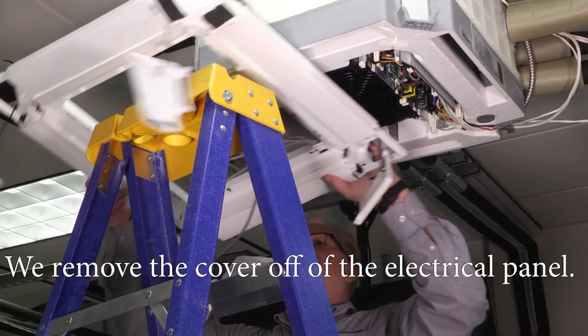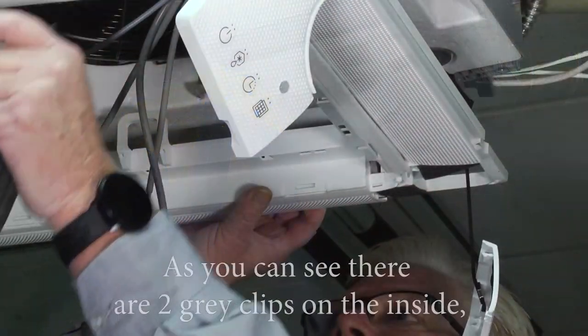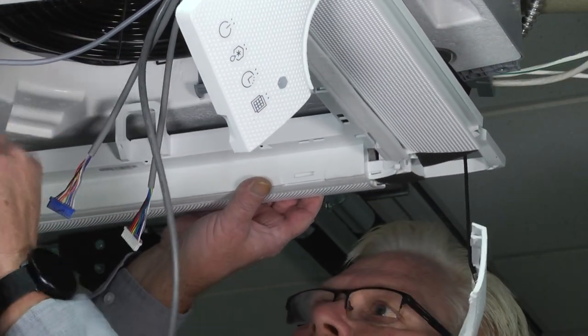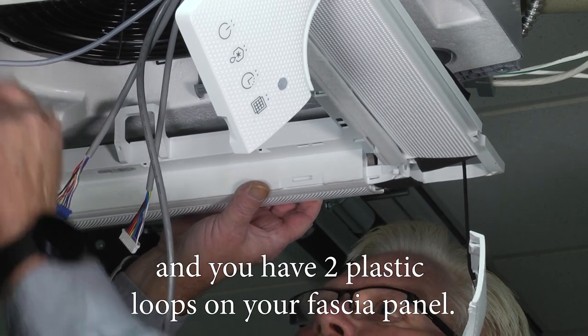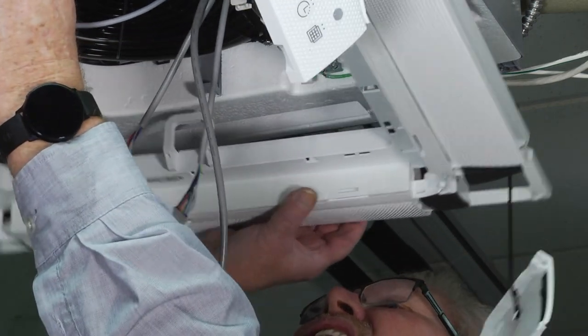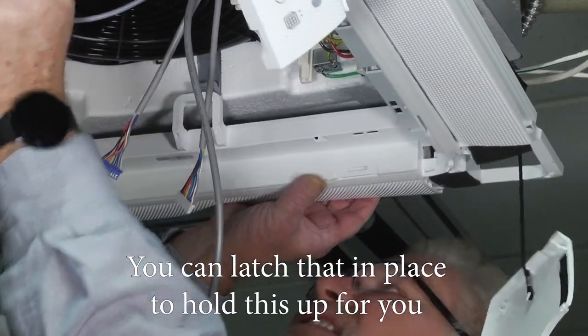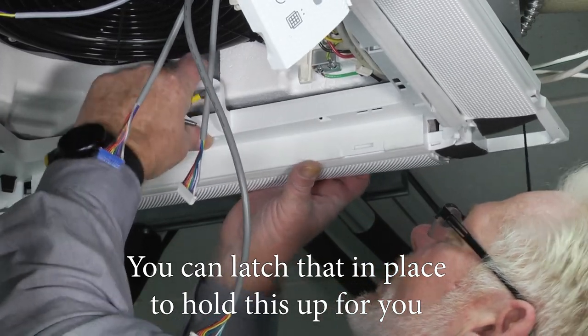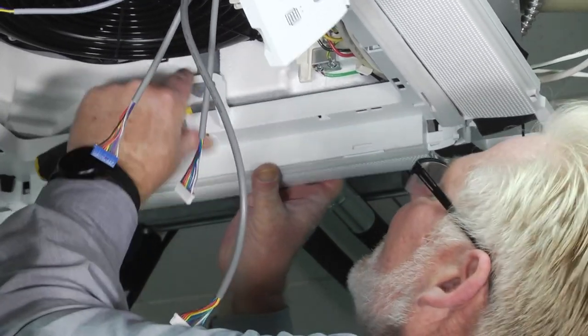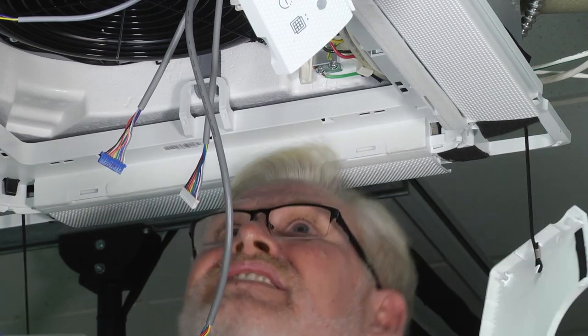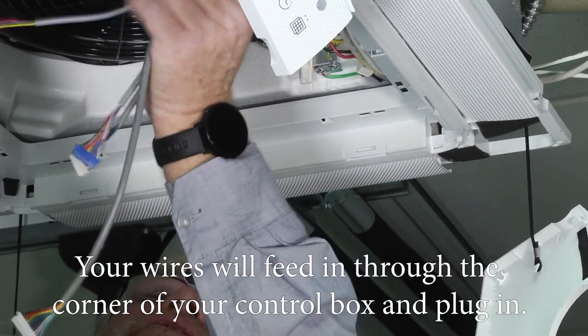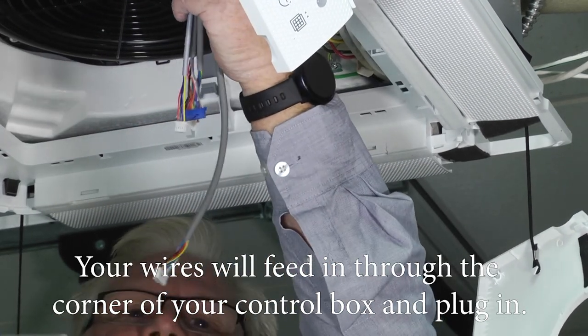Don't forget you have your manual and there's a set of screws and stuff to mount this onto the cassette to adjust it. We remove the cover off the electrical panel so as you can see there's two gray clips on the inside and you got two plastic loops on your fascia panel. You can latch that in place to hold this up for you while you're trying to get your screws in here to adjust it, and your wires will feed in through the corner of your control box and plug in.